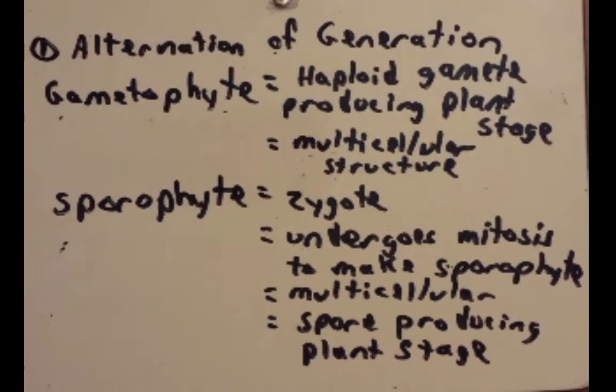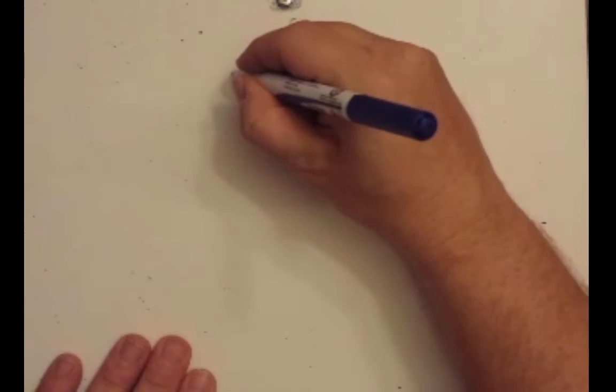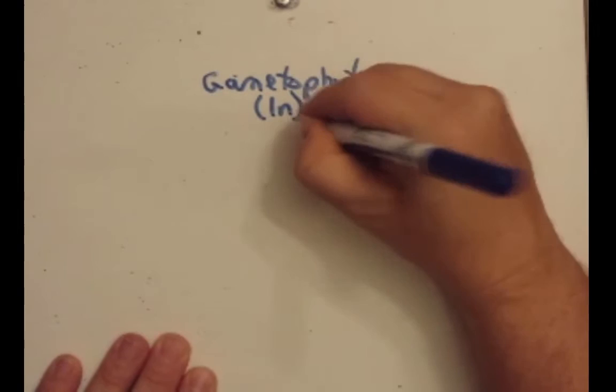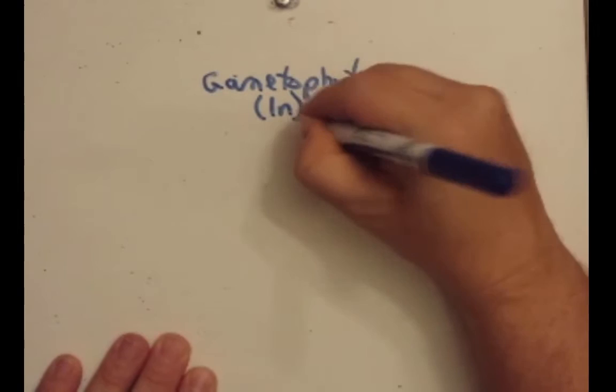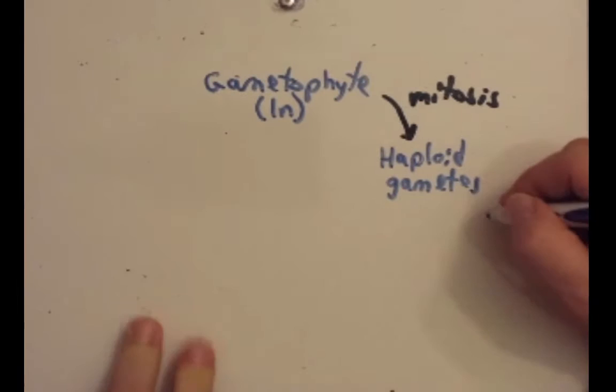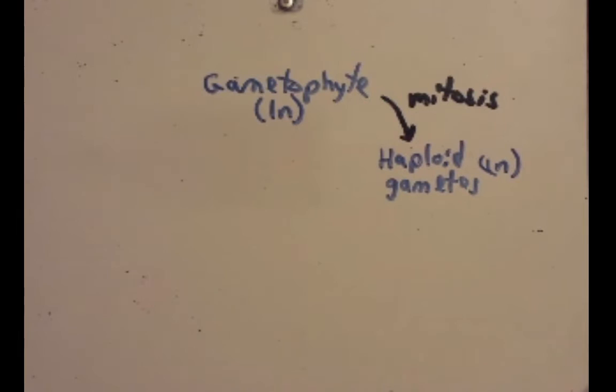We'll start with the gametophyte up here. Remember it's haploid, so it's 1N. Then through mitosis it produces haploid gametes. So these are also 1N. So remember a key feature here is it's generating these gametes by mitosis because you're going from 1N to 1N, haploid to haploid.